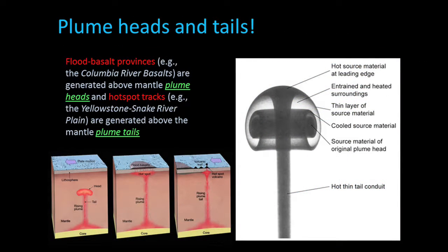Plumes are thought to be composed of two parts: a large bulbous head and a feeding plume tail. The head sort of blows up like a balloon as it rises up because it's constantly being fed by hot rock from the tail — more material is going into the head faster than the head can rise through the mantle, so it actually gets larger and larger. When it hits the base of the lithosphere, that's where it spreads out and begins to melt, producing oceanic plateaus and flood basalt provinces on the surface of the Earth.